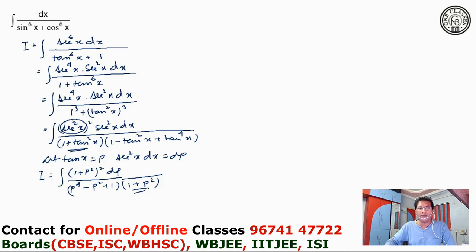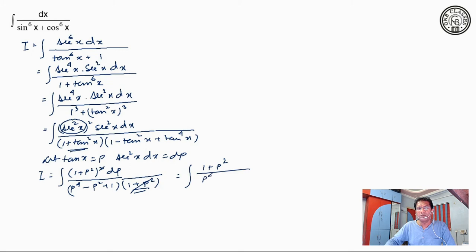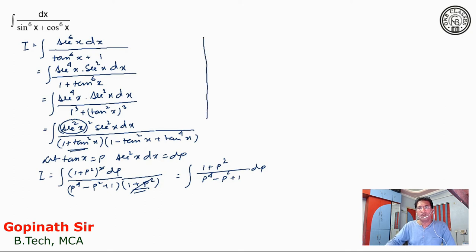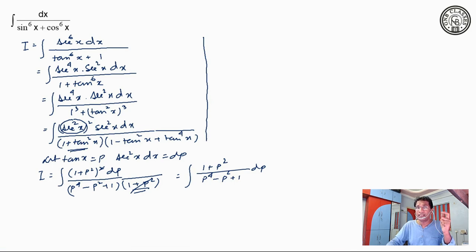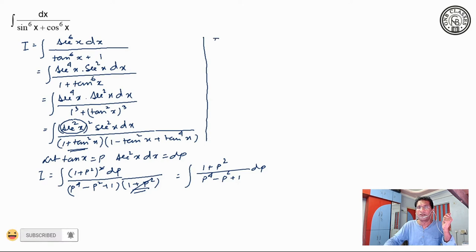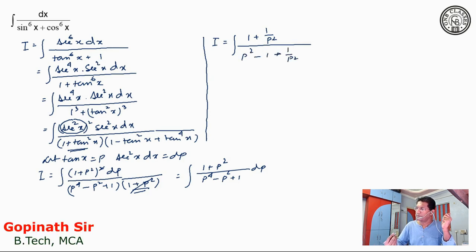So now, the 1 plus p square from numerator and denominator will get cancelled. We are left with the integral of 1 plus p square divided by p to the power 4 minus p square plus 1 dp. If you observe, in the denominator the degree of the expression is 4 and in the numerator it is 2. So this is a special integral, and we have to divide both numerator and denominator by p square. We are getting 1 plus 1 by p square in the numerator, divided by p square minus 1 plus 1 by p square.